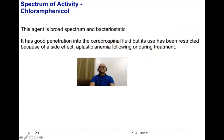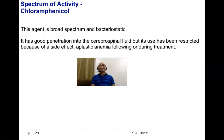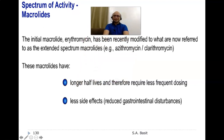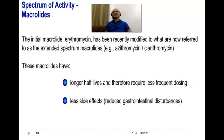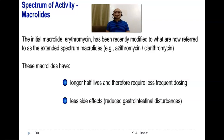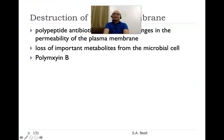Chloramphenicol is a broad-spectrum and also bacteriostatic drug. It has good penetration into the CSF, but its use has been restricted because of a serious side effect: it can destroy bone marrow, causing aplastic anemia. The macrolides — the first of which was erythromycin, discovered in the Philippines — have been modified to produce extended-spectrum macrolides such as azithromycin and clarithromycin, which have longer half-lives requiring less frequent dosing and fewer gastrointestinal side effects.